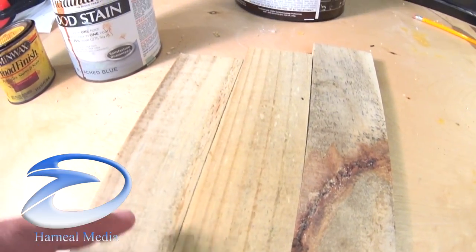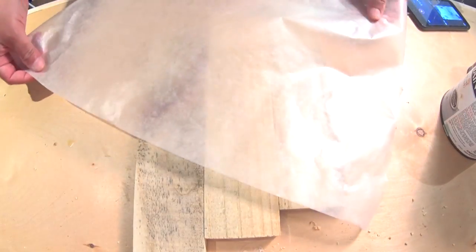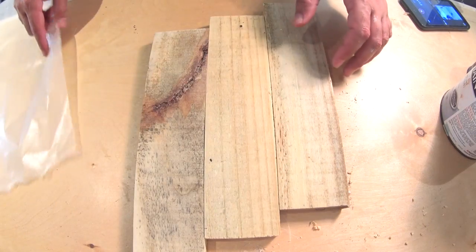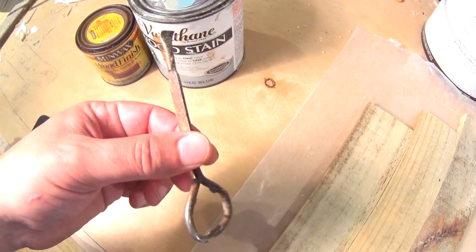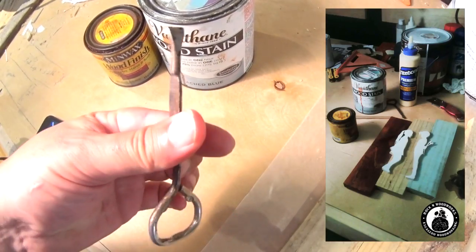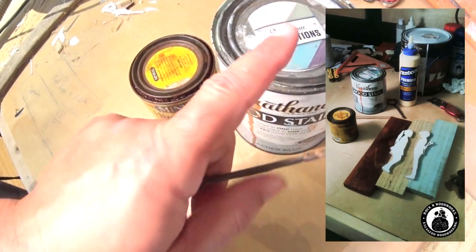So, let's do that. Actually, let's use this wax paper so we don't stain the bench. Here's my little key and we'll open up these cans.